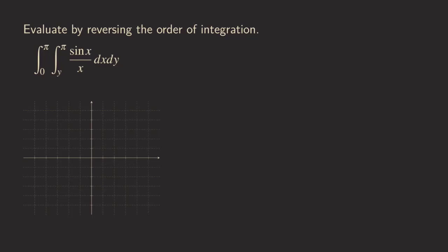My name is Wilson. Today let's talk about finding the double integral by reversing the order of integration. The reason we want to reverse the order is that when we integrate with respect to x, this function has no elementary antiderivative. So we want to switch the order so that we can integrate with respect to y first and see if we get a function we can integrate.